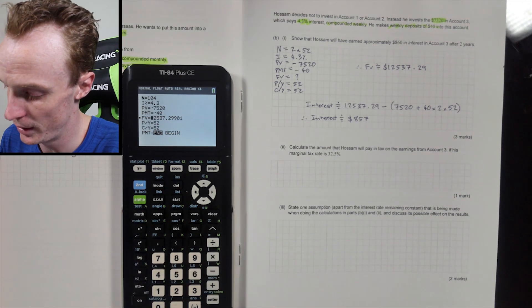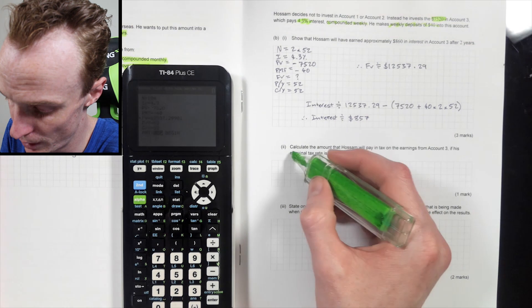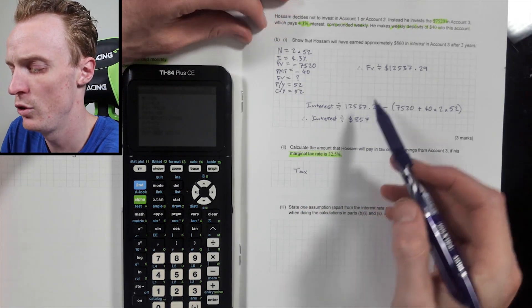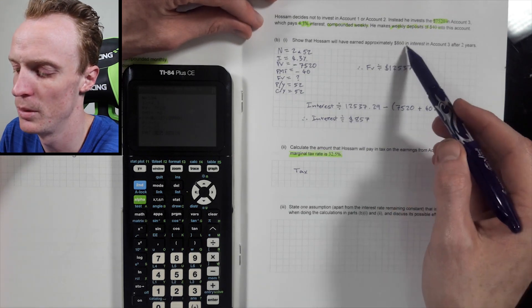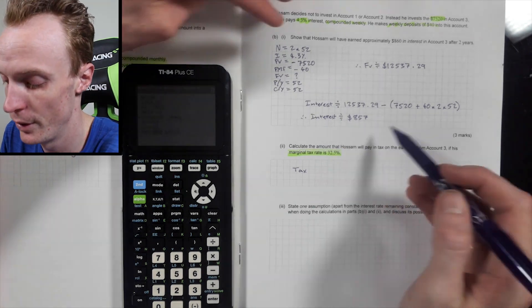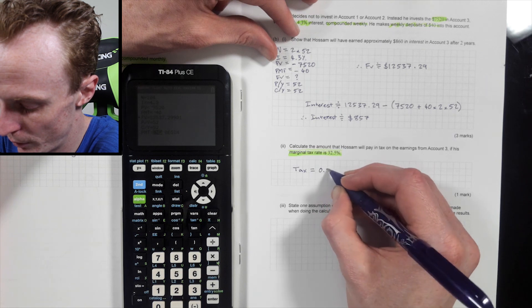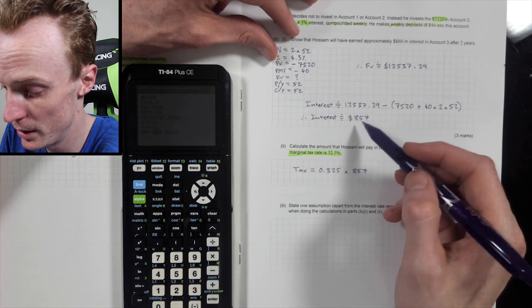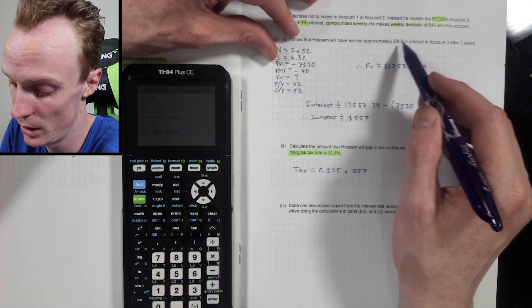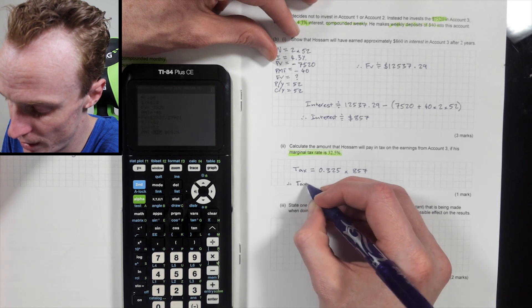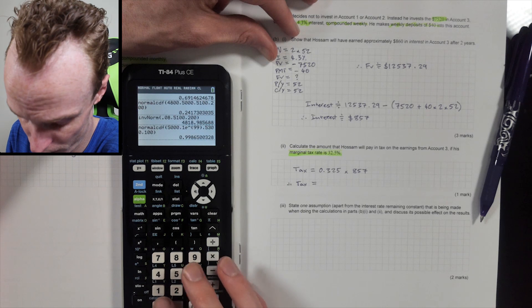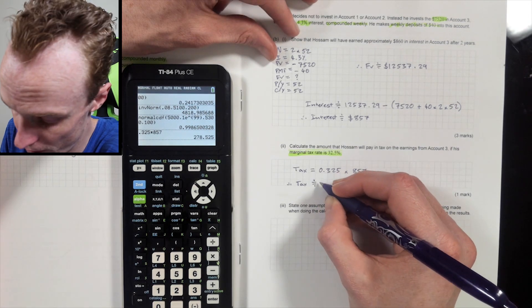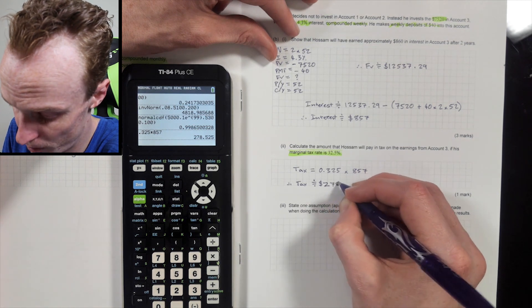Calculate the amount Hossam will have to pay in tax on his earnings from account three, if his marginal tax rate is 32.5%. So tax, if you didn't get this answer, by the way, you should be using the answer that's here. And if you didn't get close to this answer, I'd also be using this answer because I got close. I'm assuming that I got the right answer here. So I'll use the one that I had. So my tax will be, it would be my 0.325 multiplied by that amount. So 857. Like I said, because this appears like I've got the right amount, I'm going to use it. If I didn't, I would use this amount just here. So therefore, the marginal tax or the tax will equal 0.325 multiplied by 857. So it'll be approximately 278.53.